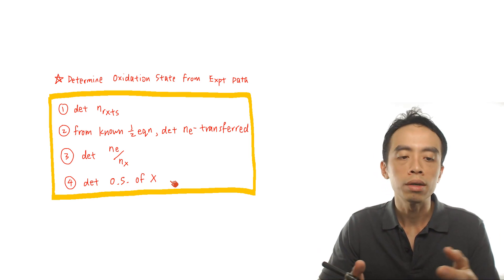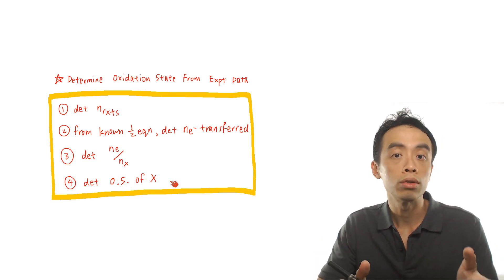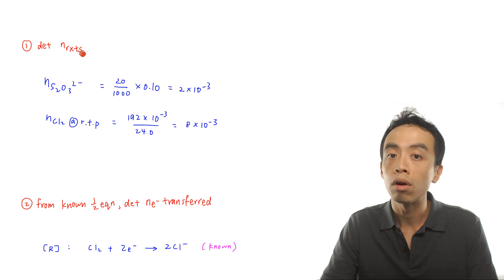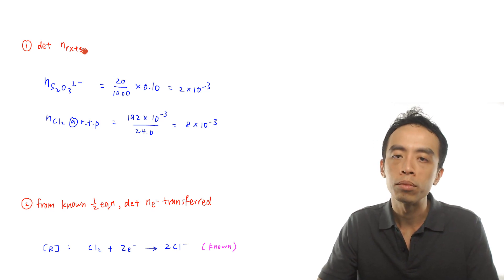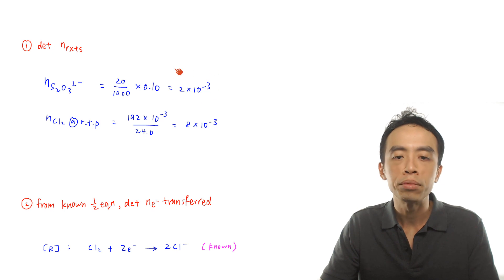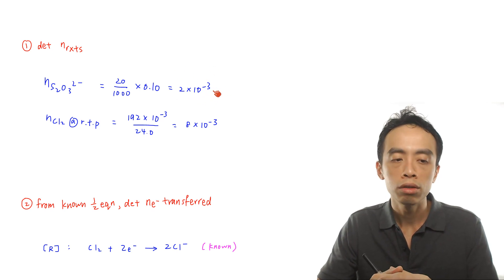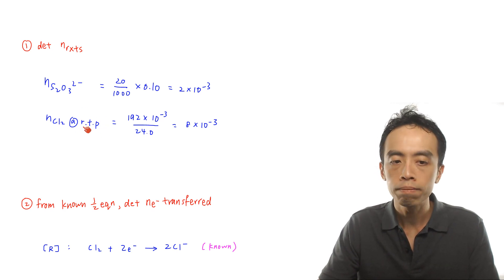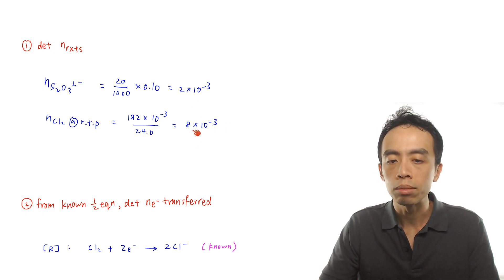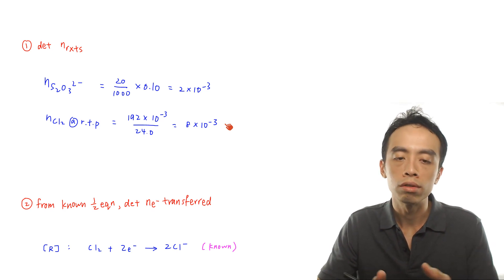Let's apply these four steps to the question. Step one: determine the number of moles of reactants. Moles of thiosulfate = (20/1000) × 0.10 = 2 × 10⁻³ mol. For chlorine gas at RTP, moles = (192 × 10⁻³) / 24.0 dm³ = 8 × 10⁻³ mol. Step one is fairly straightforward.